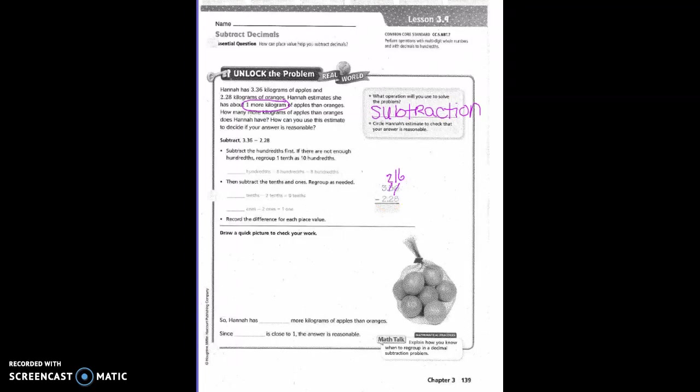Can we take 2 from 2? Yes, so that is fine. And then can we take 2 from 3? Yes. So what is our very first step? What did we learn yesterday? Bring the decimal down first. So 16 minus 8 is 8.